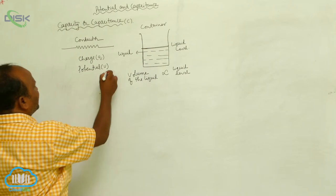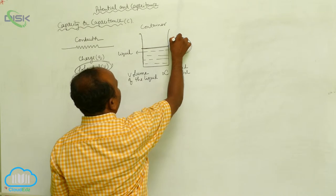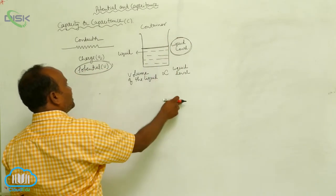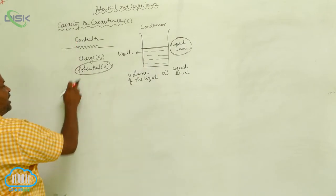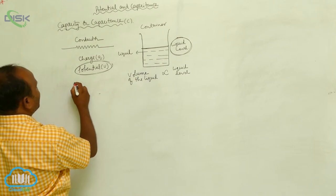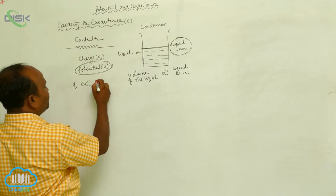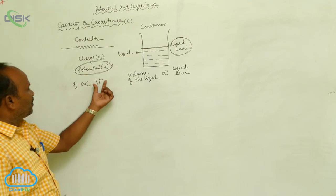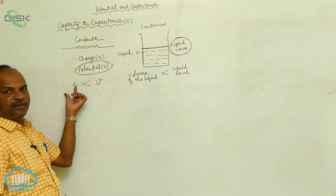This potential is similar to the liquid level. Liquid level is more, volume of the liquid is more. Liquid level is less, volume of the liquid is less. Similarly, more potential means more amount of charge; less potential means less amount of charge.